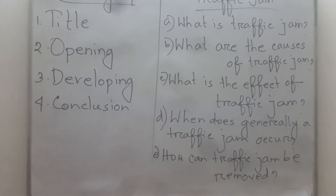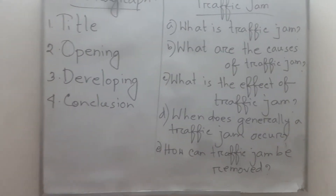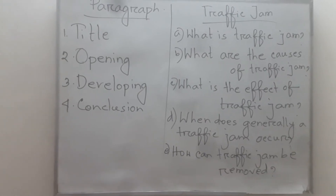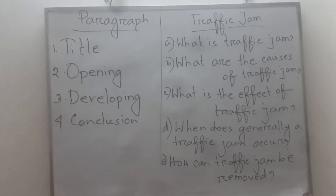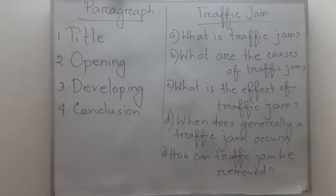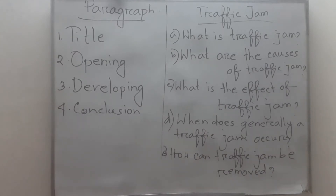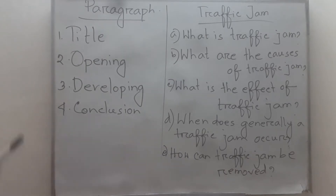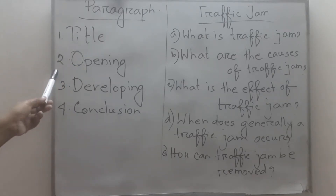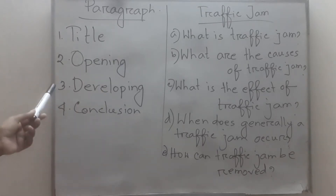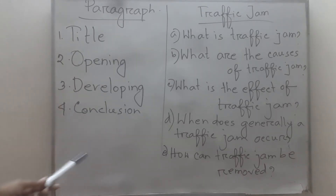Dear students, today we will read about writing a paragraph — that means how to write a paragraph. In a paragraph, some questions are given and you have to answer them. When writing a paragraph, you must consider four things: number one is title, number two is opening or introductory sentence, number three is developing, and number four is conclusion.